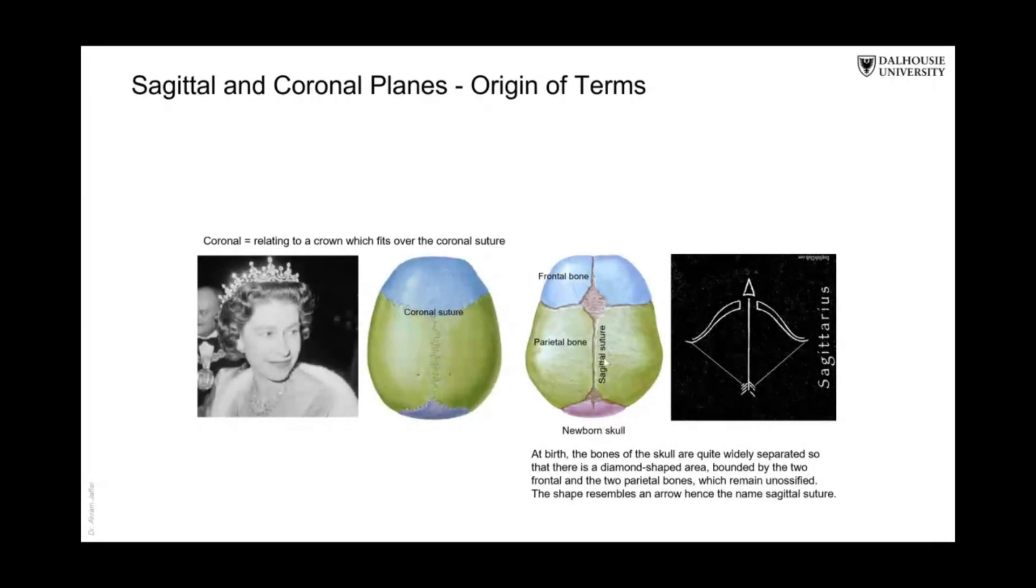So that's why this plane lies in here, lies in the sagittal plane. And that's why the sagittal plane is called the sagittal plane because it lies in the plane of this arrow.